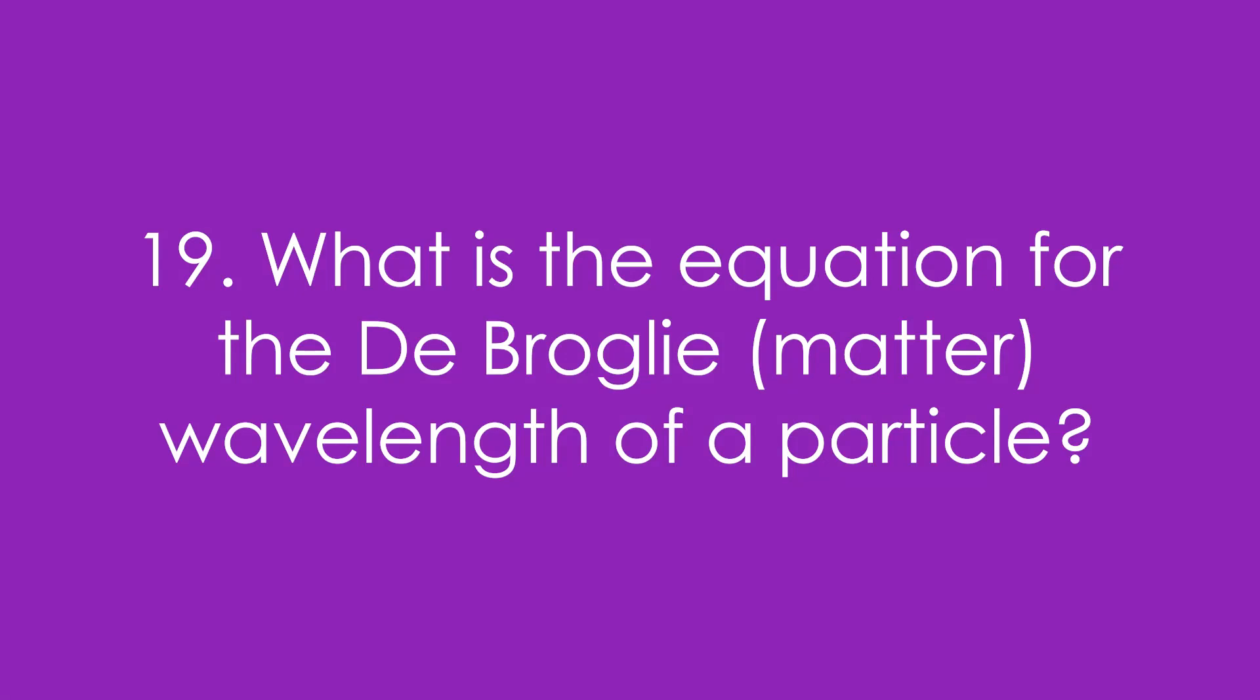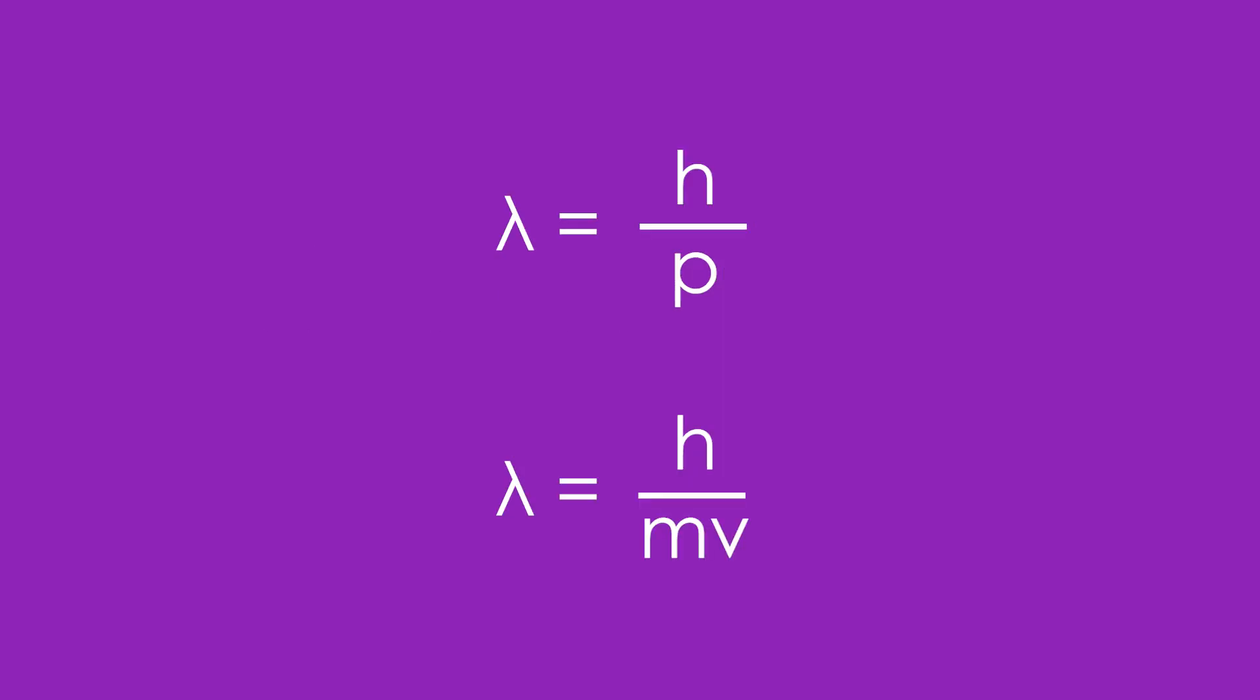Nineteen, what is the equation for the De Broglie or De Broglie wavelength? That's the matter wavelength of a particle. Lambda equals H over P. That's Planck's constant over momentum, or lambda equals H over MV.